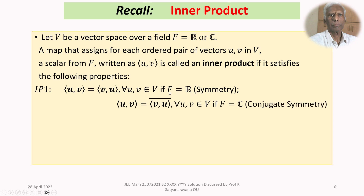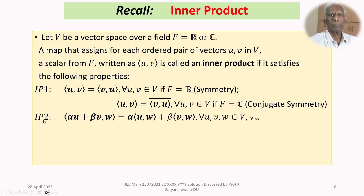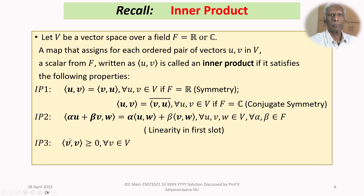The first property is the symmetry property: bracket(u, v) equals bracket(v, u) for all u, v in V when F is the field of real numbers; or conjugate symmetry: bracket(u, v) equals the complex conjugate of bracket(v, u) when F is the field of complex numbers. The second property is linearity in the first slot. IP3: bracket(v, v) is greater than or equal to 0 for all v in V. IP4: bracket(v, v) equals 0 if and only if v is the zero vector.